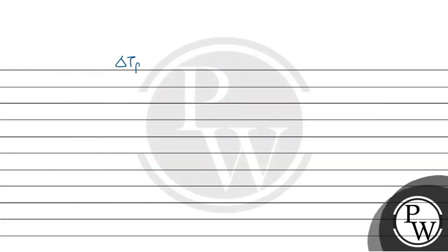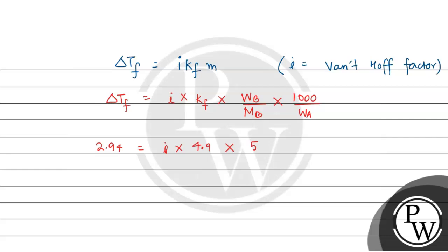Putting all the values in the equation delta Tf equals i into Kf into molality, where i is the Van't Hoff factor. Molality equals weight of A divided by molarity into 1000 upon weight of B. So this becomes 5 divided by 122 into 1000 upon 35. Solving this, i comes out to be 0.512.